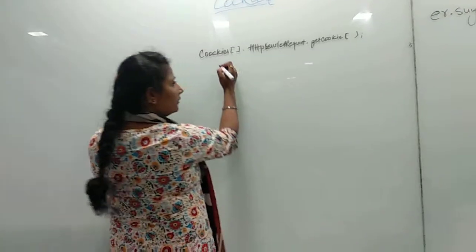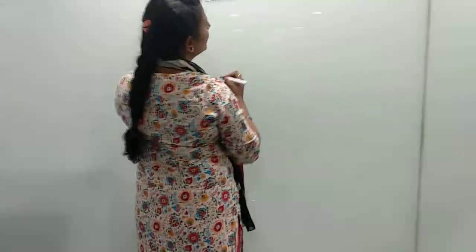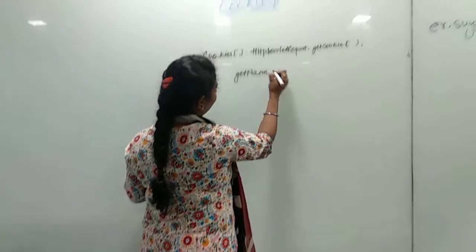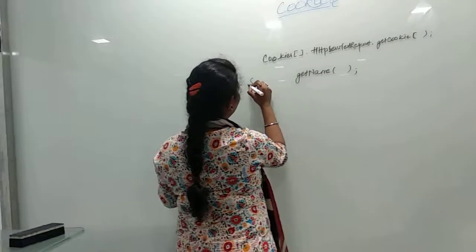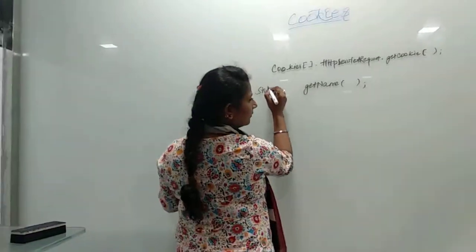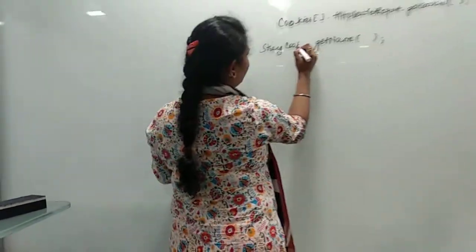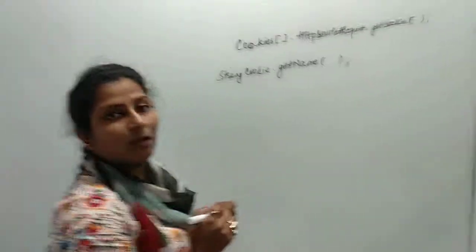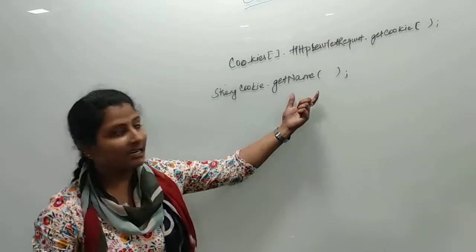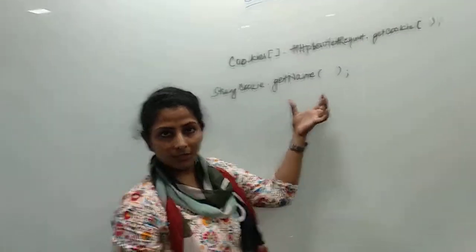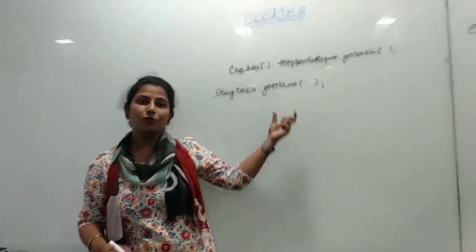Another method we have after getCookies is getName. What is the use of this method? This method is used to get the name of the cookie. If you want to use some cookie or want to perform some operations on cookies, like deletion or anything, first of all, you need to get the name of the cookie.